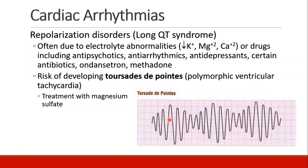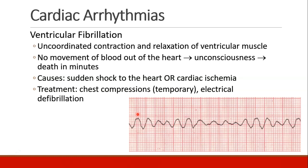Repolarization disorders are commonly associated with long QT syndrome. These are patients who may have electrolyte abnormalities or be on certain drugs that prolong the QT interval. You should be aware of some of these drugs, including antipsychotics, Zofran, and methadone. These patients are at risk for developing Torsades de Pointes, which is a polymorphic ventricular tachycardia — the treatment is magnesium. Ventricular fibrillation is uncoordinated contraction and relaxation of the ventricular muscle. There's no movement of blood out of the heart, and patients quickly become unconscious and can die within minutes. A sudden shock to the heart or cardiac ischemia can lead to V-fib. Treatment is chest compressions, ACLS, and ultimately electrical defibrillation, along with addressing the underlying problem.